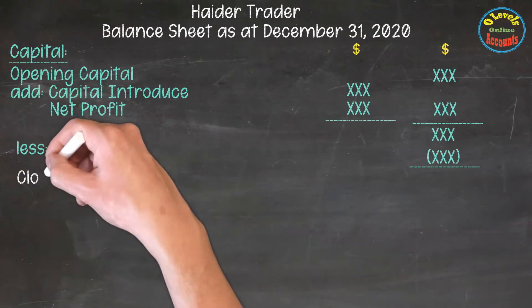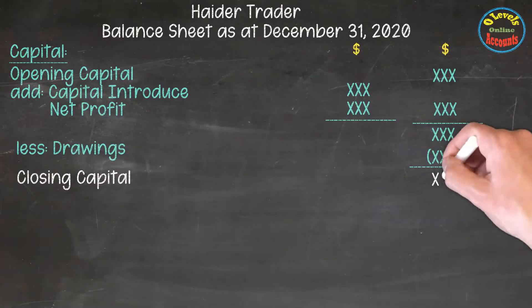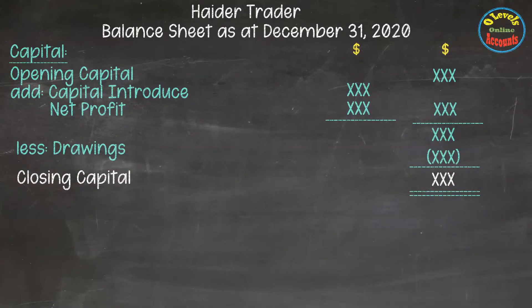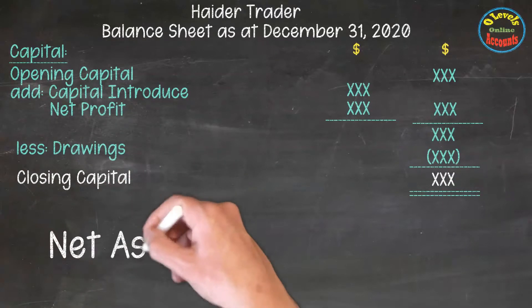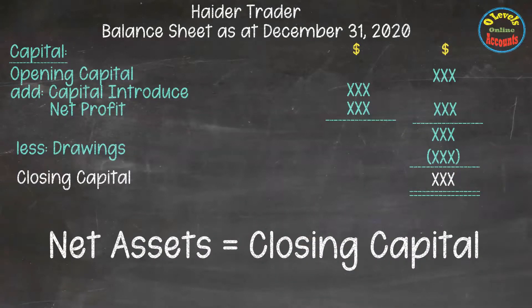In the capital portion, we will calculate the closing capital as per the previously discussed method. Net assets are equal to closing capital, and this indicates that the balance sheet is balanced.